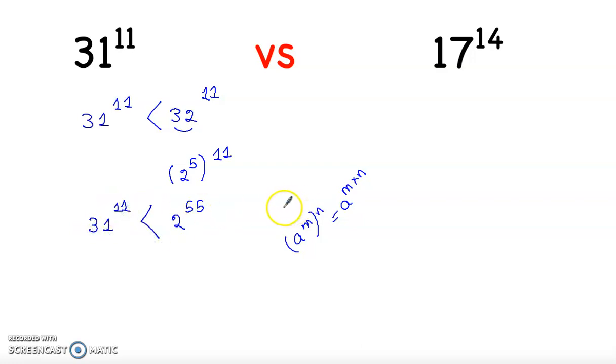Now 17 to power 14 is greater than 16 to power 14, and 16 equals 2 to power 4, to power 14. Same here, apply the rule: 4 times 14 equals 56.